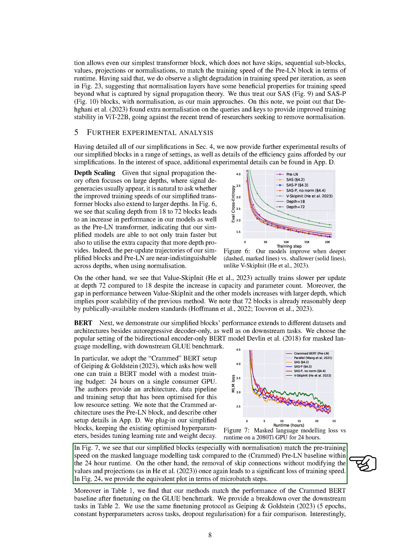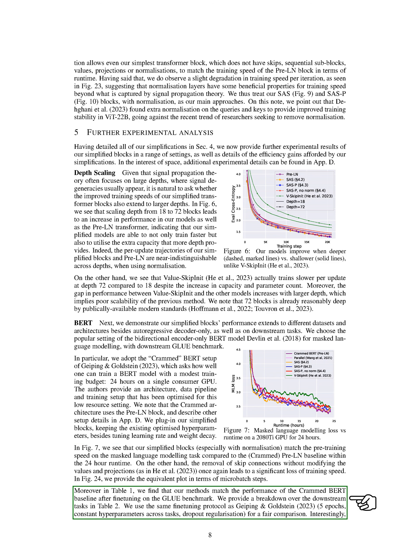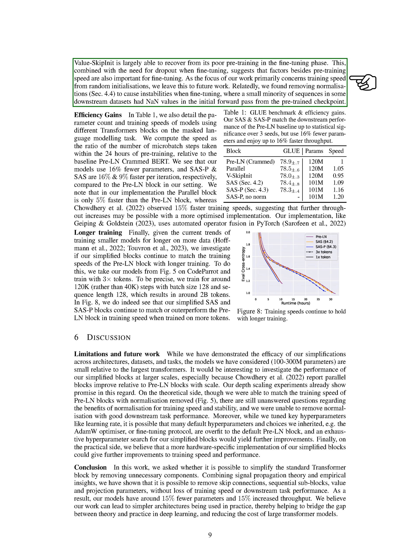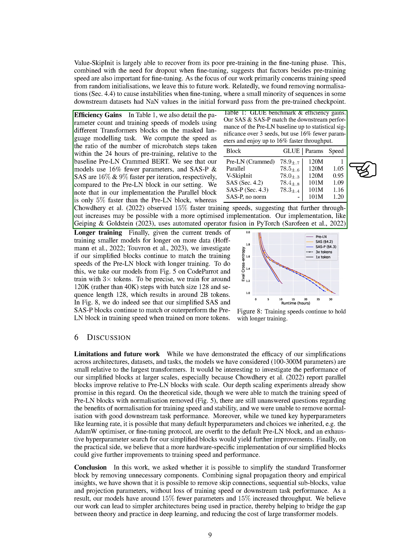Our simplified blocks matched the pre-training speed of the original crammed pre-LN baseline within the 24-hour time frame. However, removing skip connections without modifying the values and projections significantly slowed down the training speed. We also found that our methods matched the performance of the crammed BERT baseline after fine-tuning on the GLUE benchmark. Interestingly, the ValueSkipInit model was able to recover from its poor pre-training performance during the fine-tuning phase. In terms of efficiency, our models used 16% fewer parameters, and the SAS-P and SAS models were 16% and 9% faster per iteration, respectively, compared to the pre-LN block.